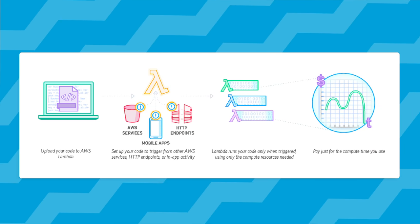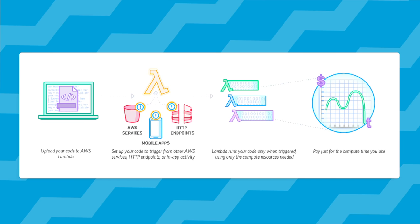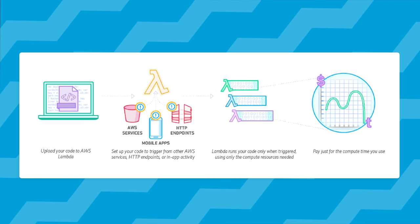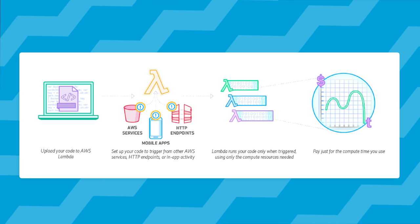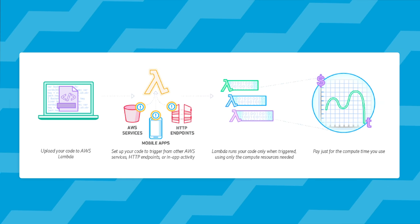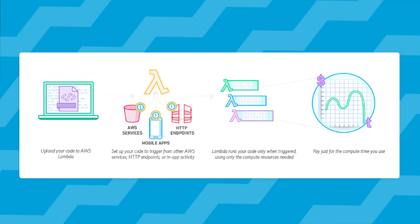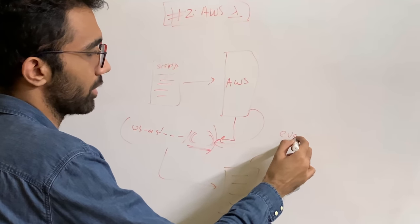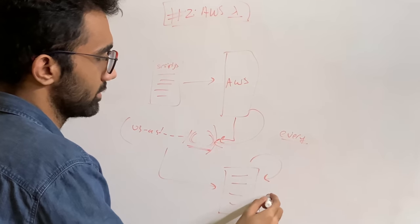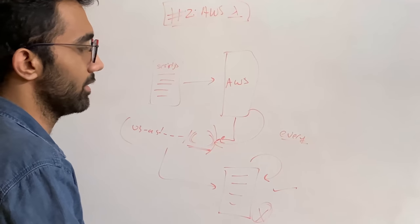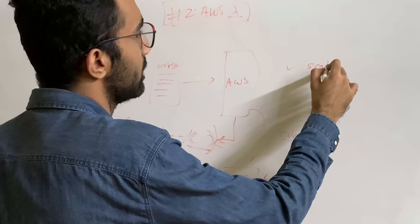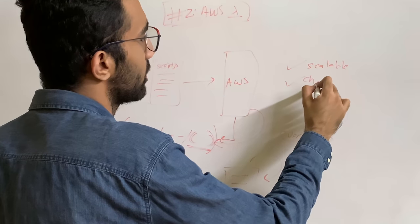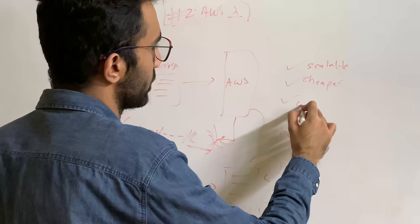And whenever you visit this endpoint, AWS would automatically create a server for you, run your code and then destroy the server sometime later if there is no traffic coming in. So you only pay for every request instead of keeping your server online all the time. So of course, this is much more scalable, much more cheaper and much more convenient as well compared to your local setup.